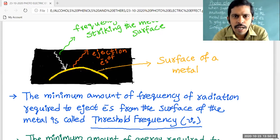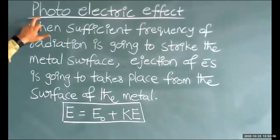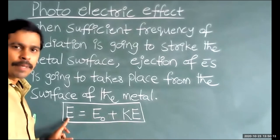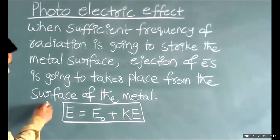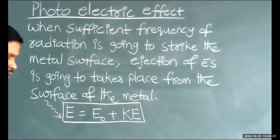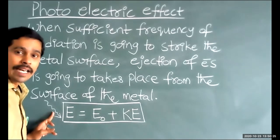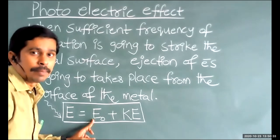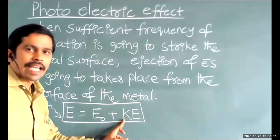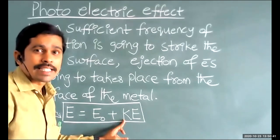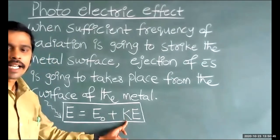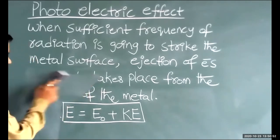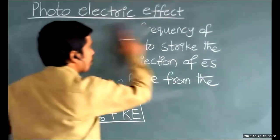Now coming to the point. The photoelectric effect is mathematically represented as E = E₀ + KE. Here capital E is the amount of energy striking onto the surface of the metal, E₀ is the threshold energy of the metal, and KE is the kinetic energy of the ejected electrons.